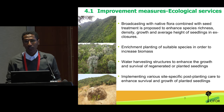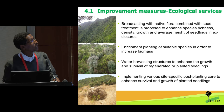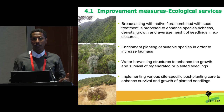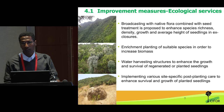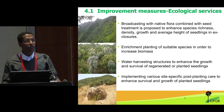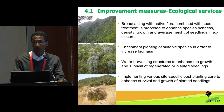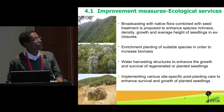The improvement measures were identified in terms of ecological services. One idea proposed is to improve native species composition, because communities still want to see native species coming up. Broadcasting methods could be better than planting in some cases. Enrichment planting of economically valuable species should also be introduced. Water harvesting structures are recommended to increase survival rates. Implementing various site-specific post-planting care is also one of the gaps lacking in current exclosure interventions.